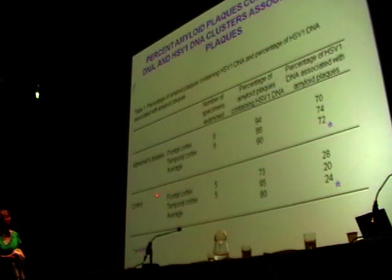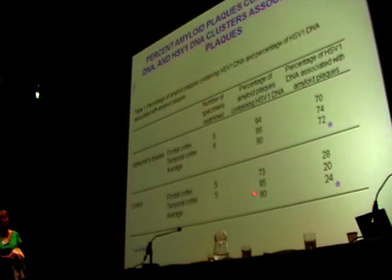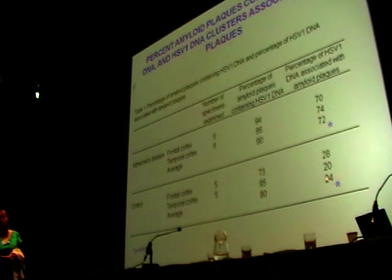In the case of the elderly normal brains — age-matched normals — about 80%, a somewhat lower percentage which may or may not be significant, of plaques contained viral DNA. But a much lower proportion of the viral DNA was associated with plaques.